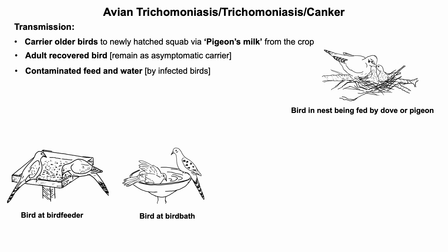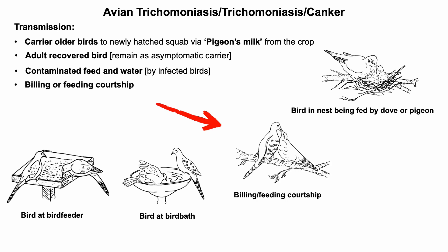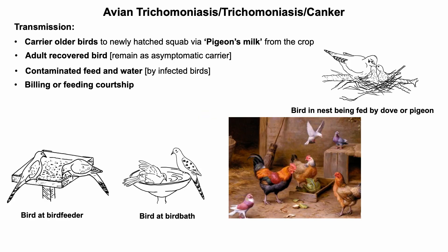Adult recovered birds remain as asymptomatic carriers and act as a source of infection for other birds. They can contaminate bird feeders and bird baths and transmit the infection to other birds. It has been reported that Trichomonas gallinae can survive in water for 20 minutes to several hours. Infection can also be transmitted through the bill during courtship. Pigeons that feed with domestic poultry are often blamed for contaminating feed or water and passing the infection to poultry.